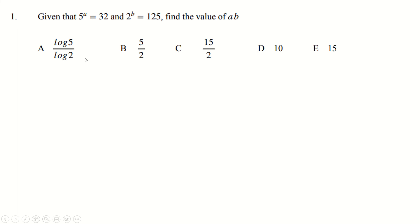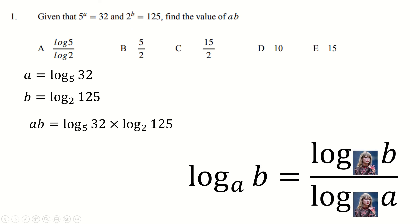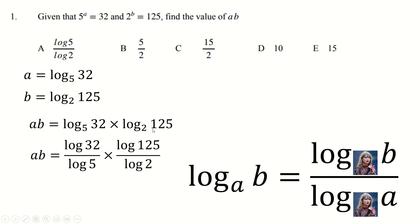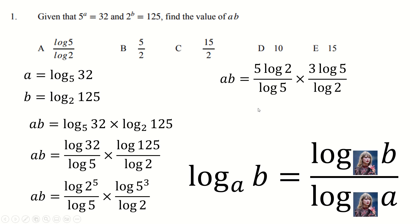Firstly we just use the definition of logs and exponentials to say that this means a equals log to base 5 of 32, and the same one here. Now we're trying to work out a·b so we multiply them together. We can't really multiply logs of a different base, so we have the Taylor Swift change of base law to fix that. Log to base 5 of 32 is log of 32 over log of 5. Of course 32 is 2 to the power 5 and 125 is 5 to the power 3. We bring those powers down to the front and then cancel out all the logs, and we end up with 5 times 3 is 15 for our first answer.